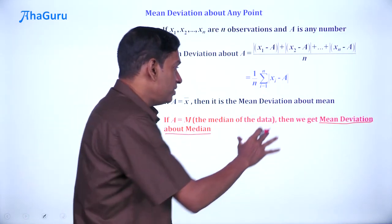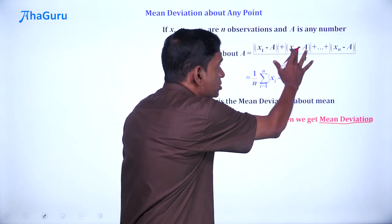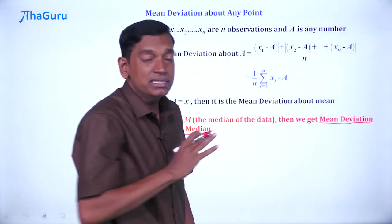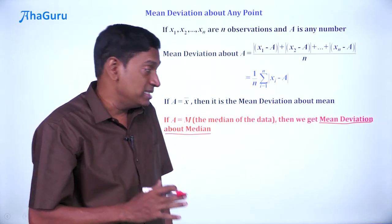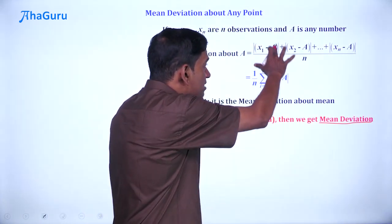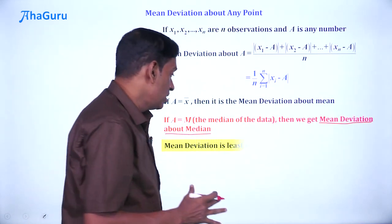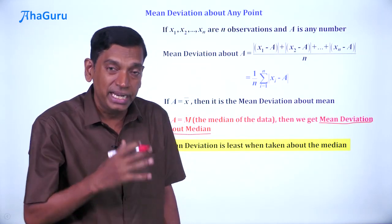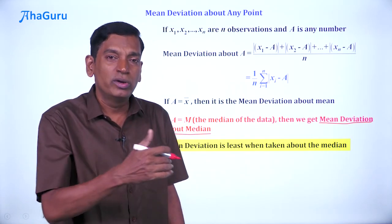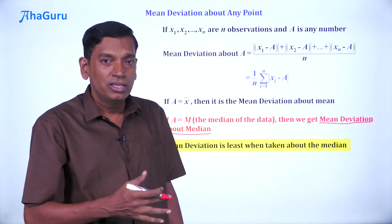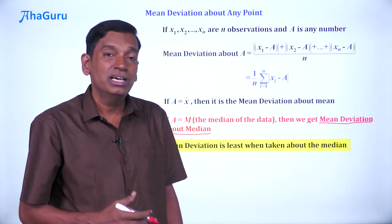Now think about it. If you have the MD about the median, each of these terms will be x1 minus M, x2 minus M, etc., till xn minus M. Now, one important property of this MD about median is that among all the different points that you can take for a, the least value of the mean deviation will occur when you take it about the median. Now, this is something that I am just giving as a statement. One can prove it but it is a little too involved and not necessary for this level. You can just know this that mean deviation is the least when you take it about the median.